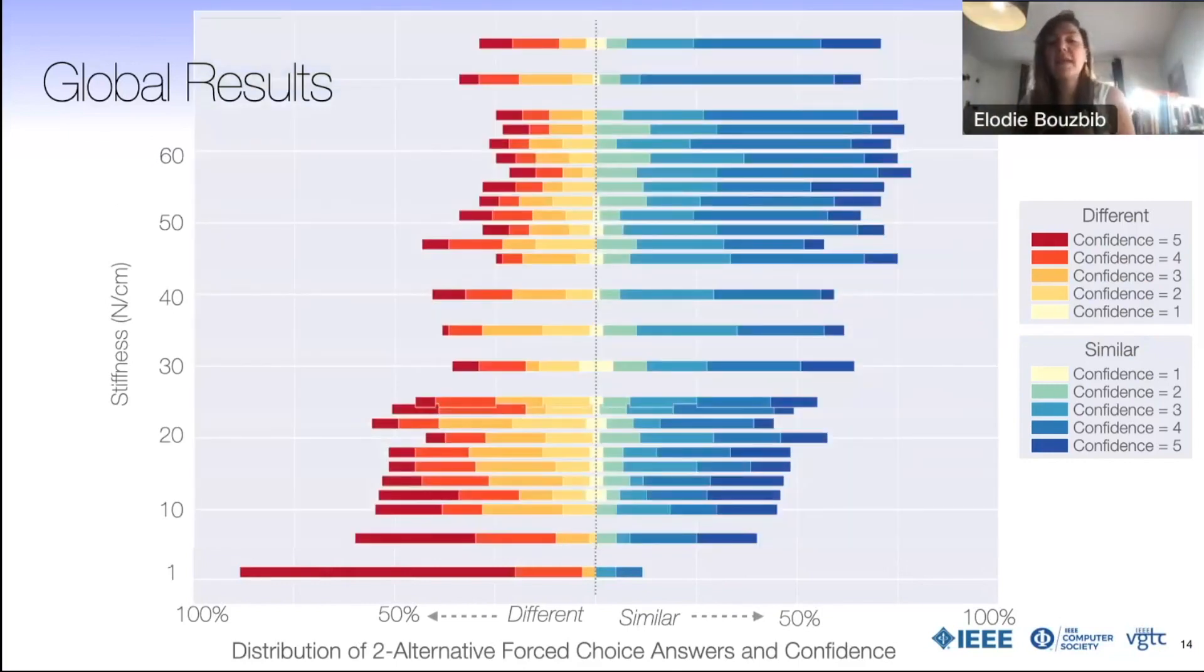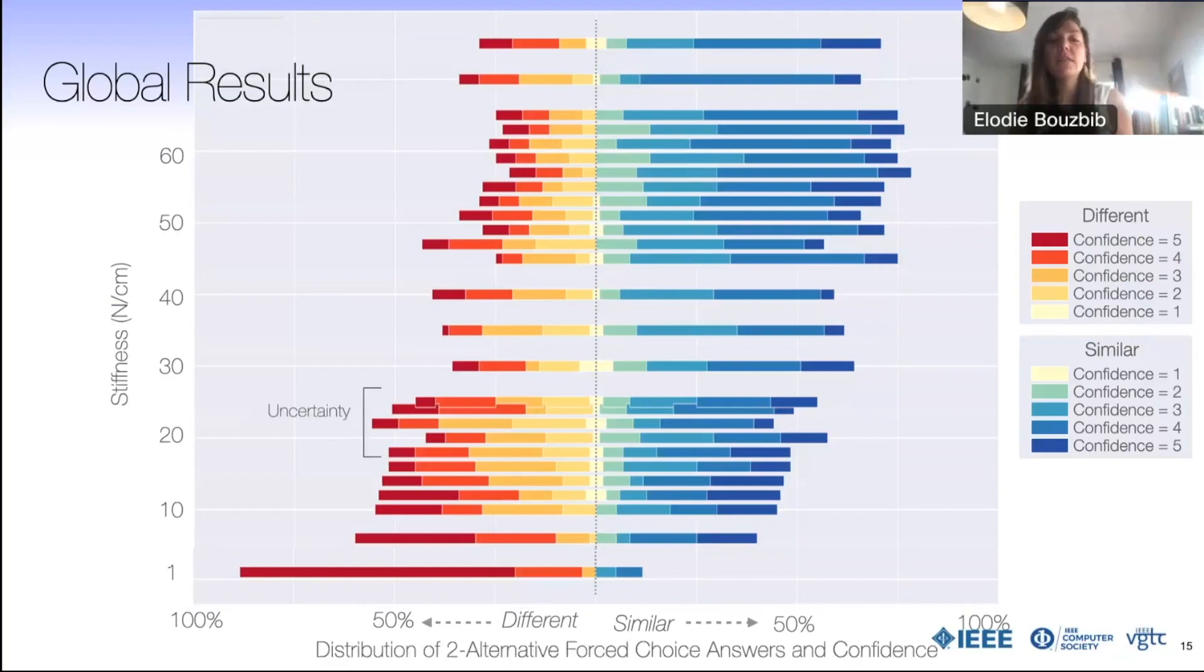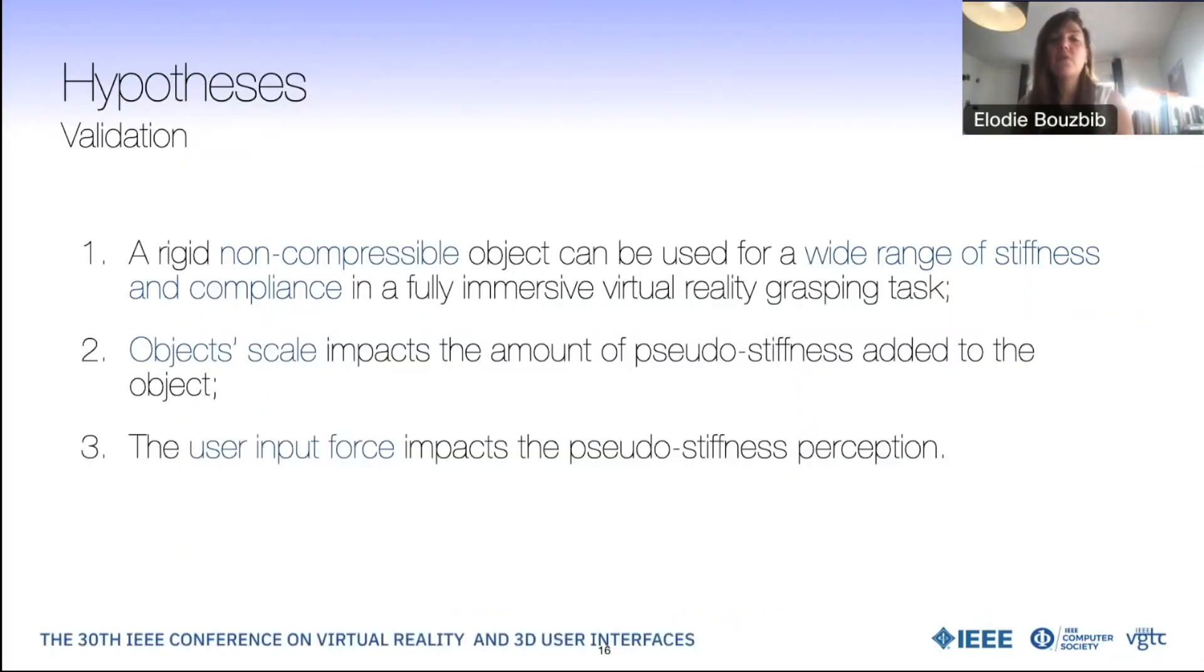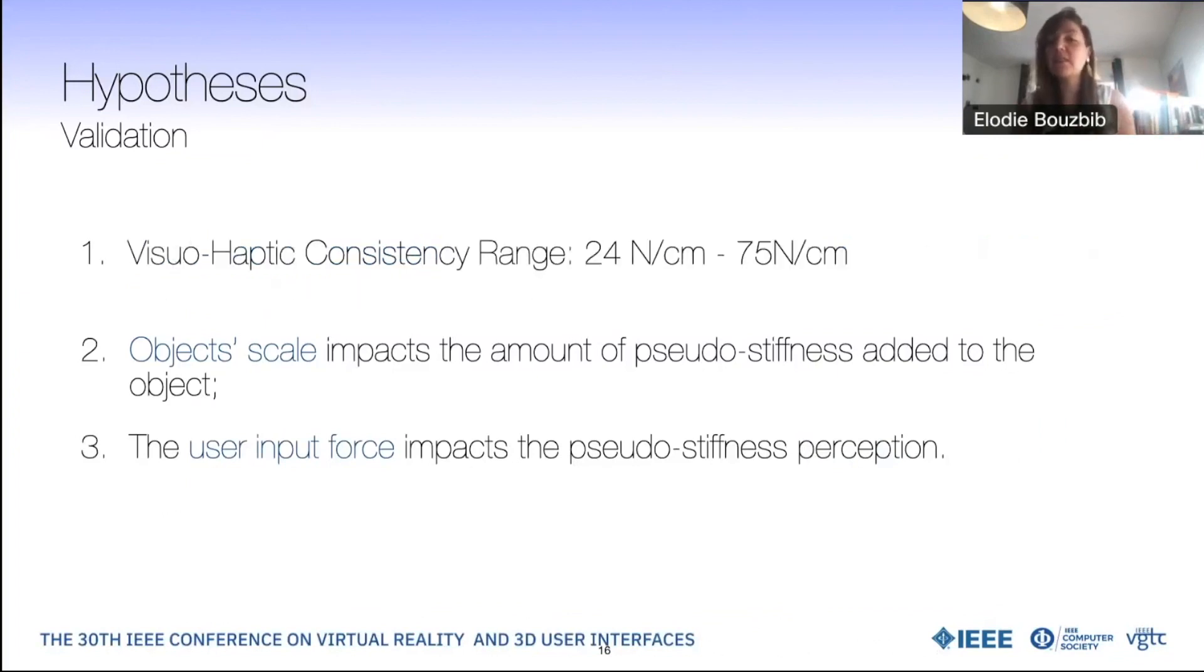For the rest, as expected, the high values were believable and they decreased up to what we will define as the point of subjective visual haptic consistency. We noticed that this threshold is around this uncertainty area and more precisely, we define it for k equal to 24 newton per centimeter. We therefore verify our first hypothesis with a visual haptic consistency range from 24 newton per centimeter to at least 75 newton per centimeter.